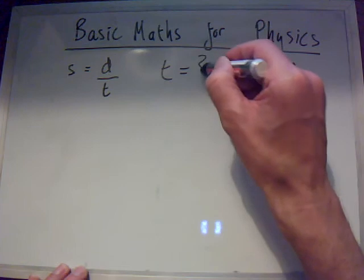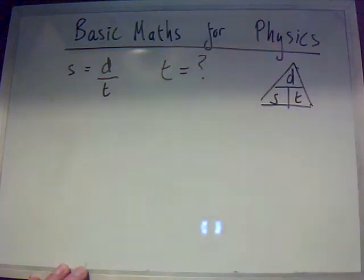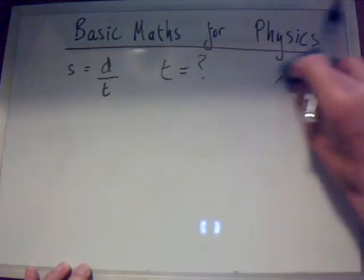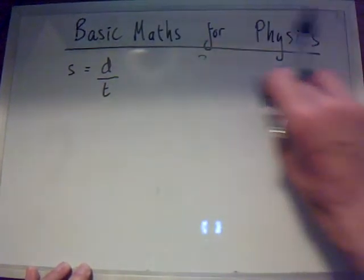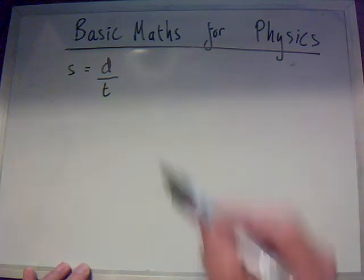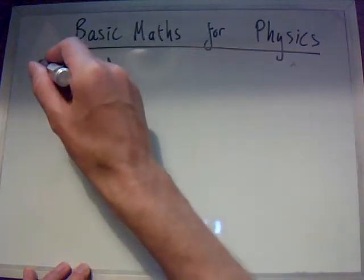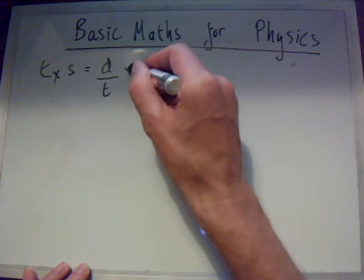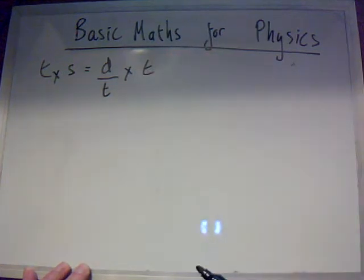So what is time equal to? Well, just like maths, what you do to one side of the equation, you do to the other. So to get time to the top, what we need to do is multiply both sides by time. So do the same to both sides, like that.